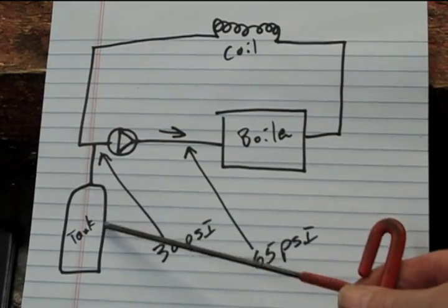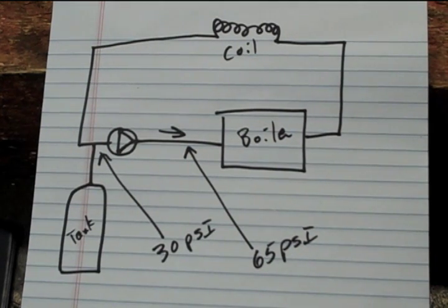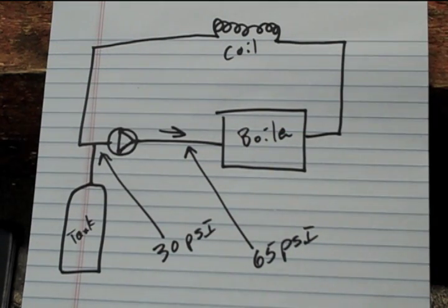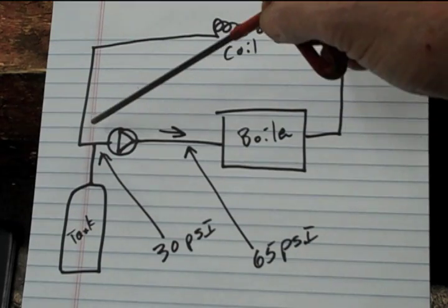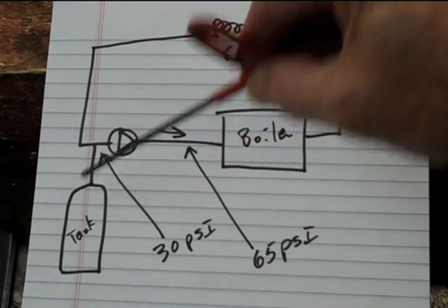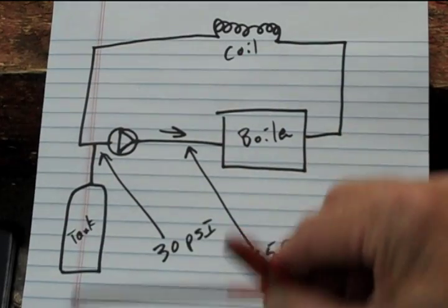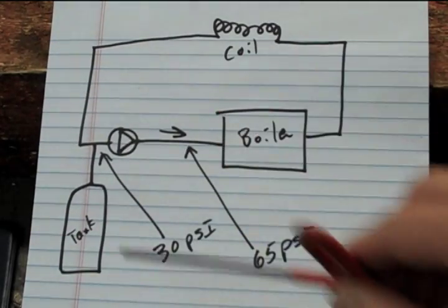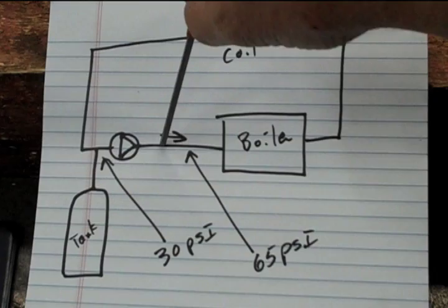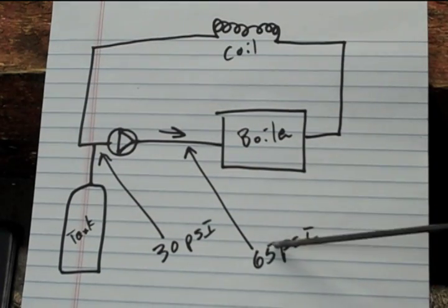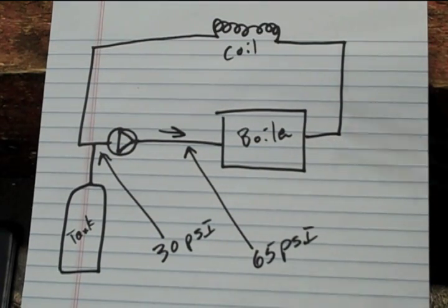Before you attach your tank to the system it needs to be pre-charged to the pressure of the system at the attachment point. On this one where the pressure is 30 psi on the suction side of the pump, that's where we're attaching, so we're going to pre-charge the tank to 30 psi before we attach it. If we were attaching it on the discharge side of the pump where there's 65 pounds of pressure, we would pre-charge it to 65 pounds.